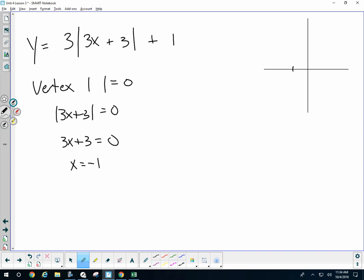So again, at negative 1, I have my vertex. But find the x, y point to find the exact location of my vertex.